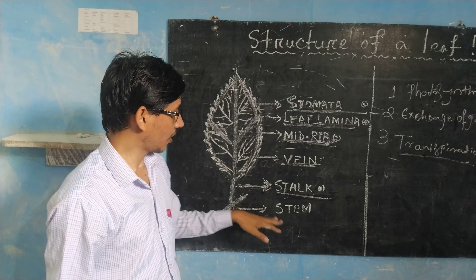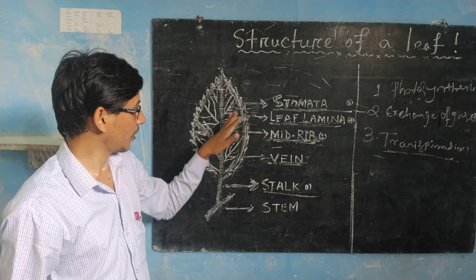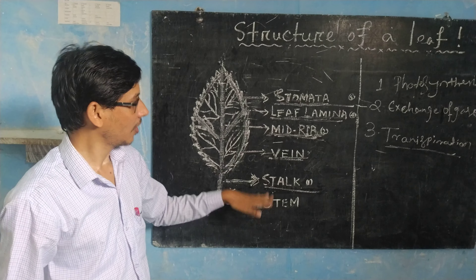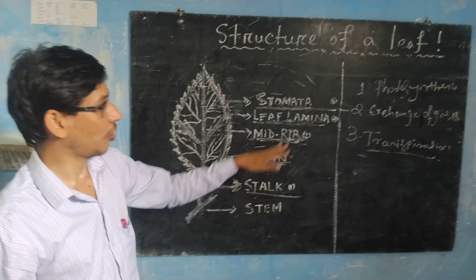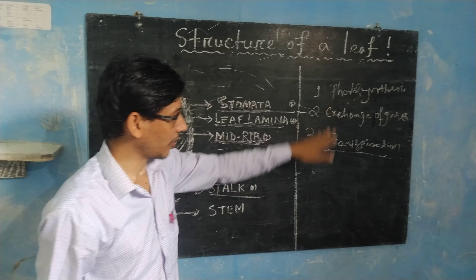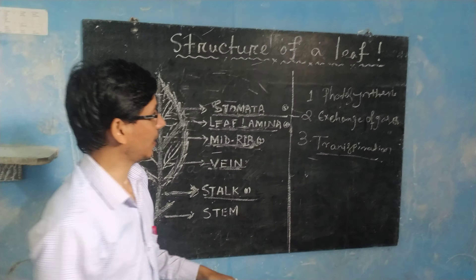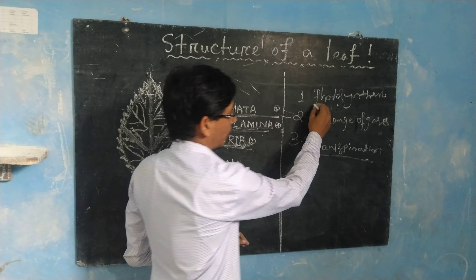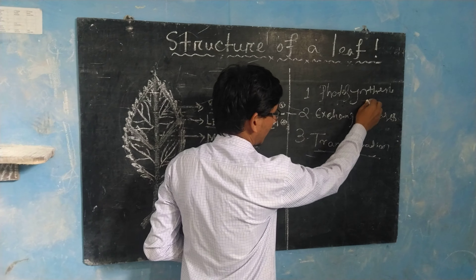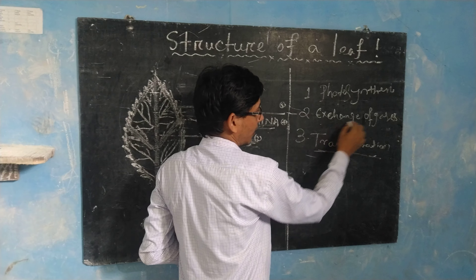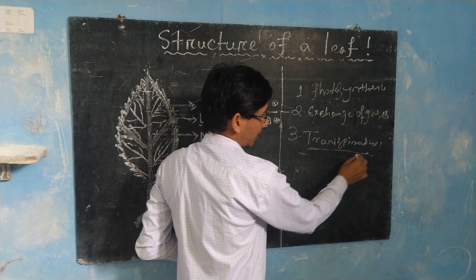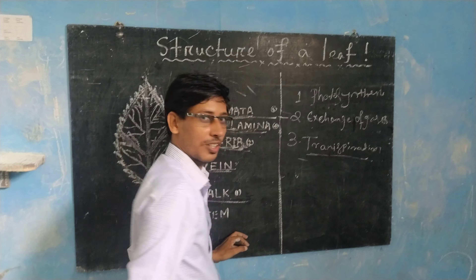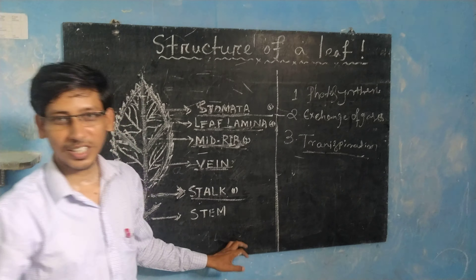The conclusion of the main functions of the leaf are: the photosynthesis process, exchange of gases, and the transpiration process. Thank you.